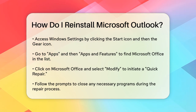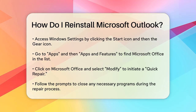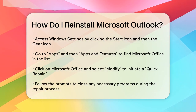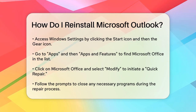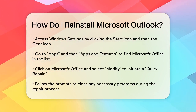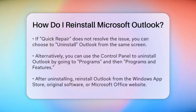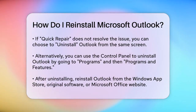If the repair doesn't solve your issue, you can choose to uninstall Outlook from this same screen. Another way to do this is through the Control Panel. Type Control Panel in your search bar, open it, and go to Programs and then Programs & Features. Find Microsoft Office, right-click it, and select Change. In the Settings box that opens, choose Quick Repair or Uninstall if you need to start fresh.